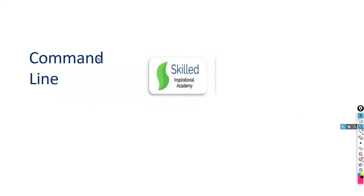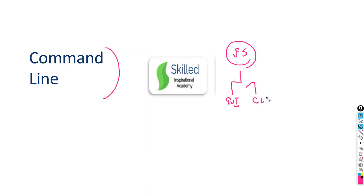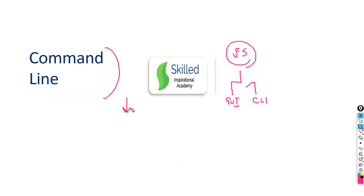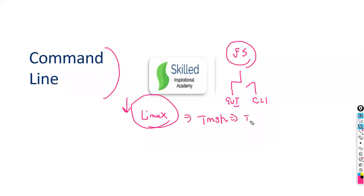CLI is always required. Whenever you learn any technology, whether it's F5 or anything, you should know things via GUI versus CLI. F5 CLI is not a big topic if you understand the architecture. When I talk about the command line interface of F5, it works on Linux and follows your TMSH shell — Traffic Management Shell — and it follows a tree architecture. If you understand that tree architecture, it's easy.